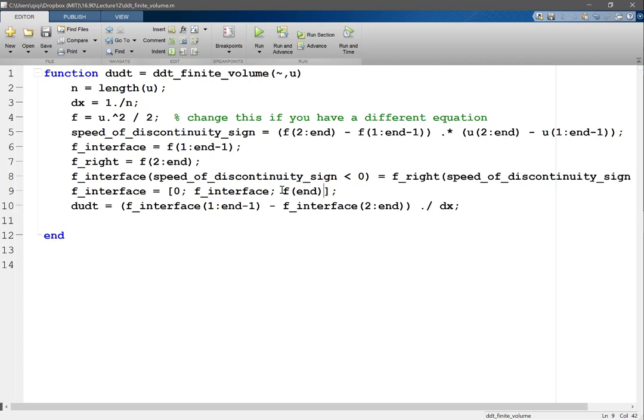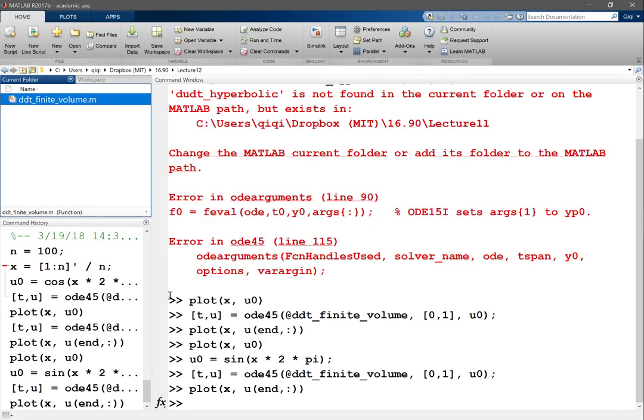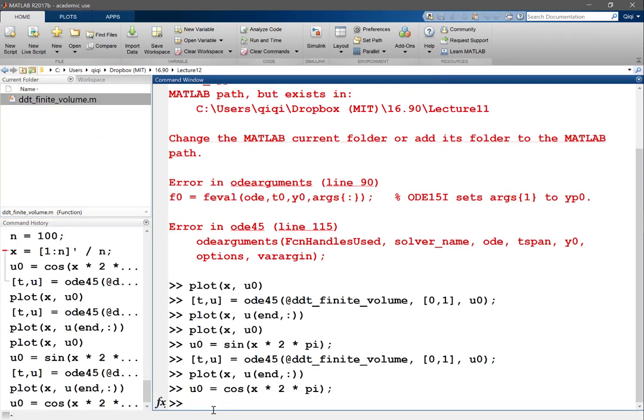Which is the flux computed at the very last interval. For this case, I actually know that the waves are traveling towards the right at that location, so it's appropriate to use the flux on the left. So let's do that and let's go back to our u0, go to cosine.